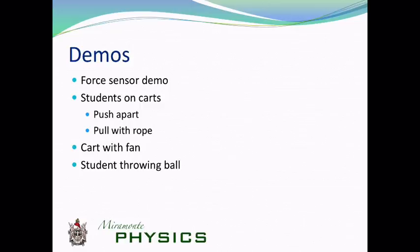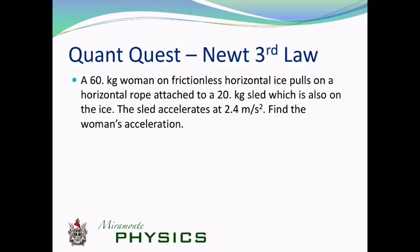So here's some fun demos that you're going to miss because you're not in class. It's too bad. Okay, here is a practice problem, Newton's third law. And it says, a 60-kilogram woman on a frictionless horizontal ice pulls on a horizontal rope attached to a 20-kilogram sled, which is also on the ice. The sled accelerates at 2.4 meters per second squared. Find the woman's acceleration.